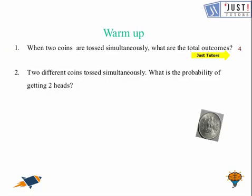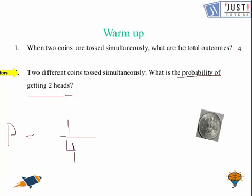So total there are four outcomes, and here two different coins toss simultaneously and this time we need to find the probability of getting two heads. So for getting two heads the probability P will be one over four, as there are four outcomes and there is only one event that is two heads. So this is the probability and if you got the answer that's really amazing.